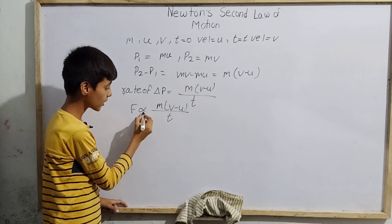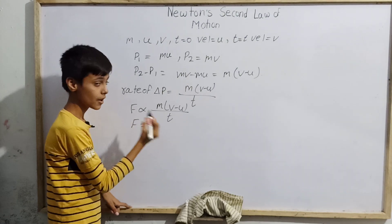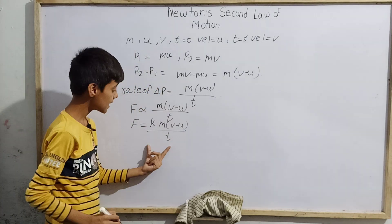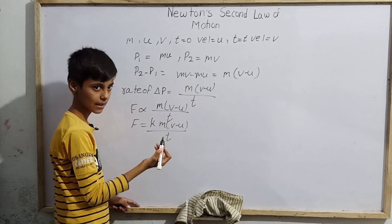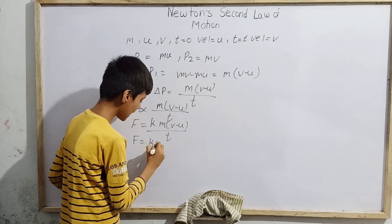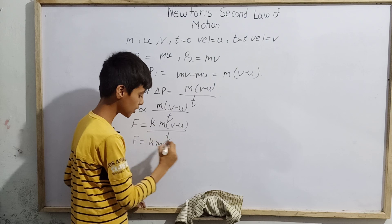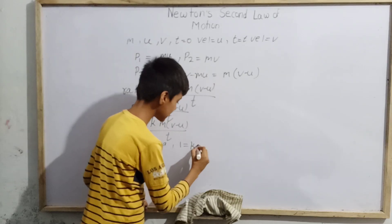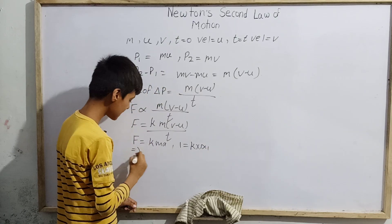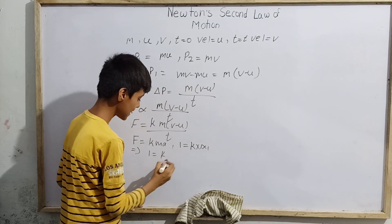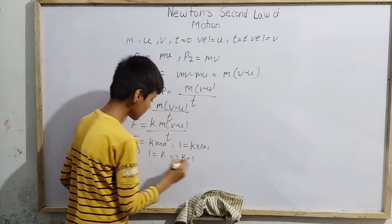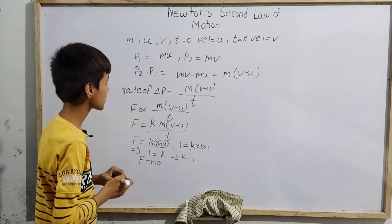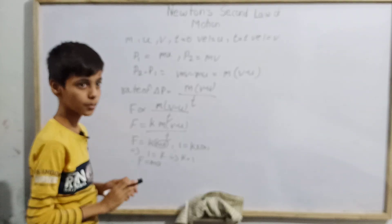So we can write F equals K times M(V minus U) divided by T, where K is the proportionality constant. Since (V minus U) divided by T is acceleration A, this becomes F equals KMA. By choosing units such that force, mass, and acceleration are each one unit, we get K equals one. Therefore F equals MA — this is the final derived equation and the mathematical formulation of Newton's second law of motion.